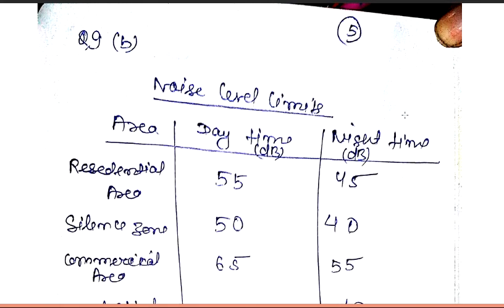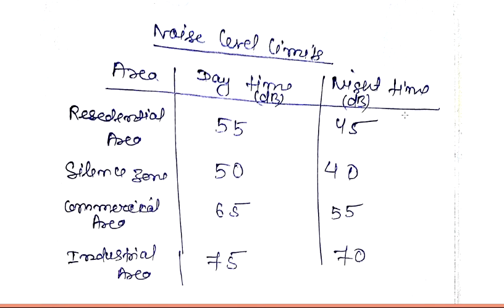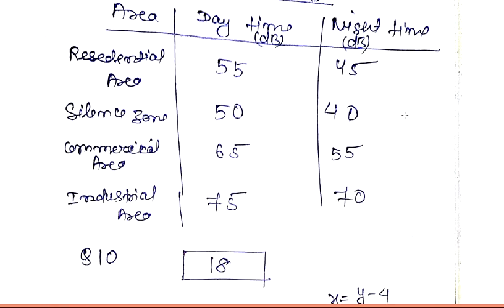Question number nine answer is B. The permissible noise limits are: residential area — daytime 55 dB, nighttime 45 dB; silence zone — daytime 50 dB, nighttime 40 dB; commercial area — daytime 65 dB, nighttime 55 dB; industrial area — daytime 75 dB, nighttime 70 dB.